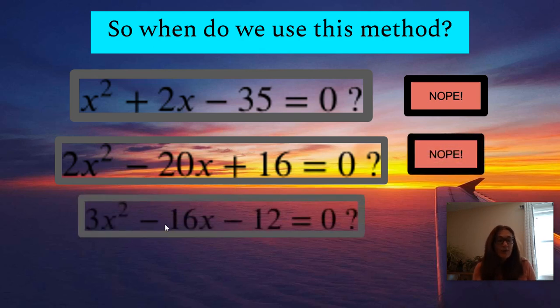But then the third one, we have 3x squared, but then notice that negative 16 isn't divisible by 3. So this would be perfect for using this way of factoring.